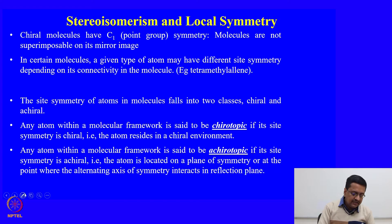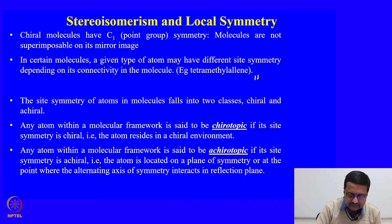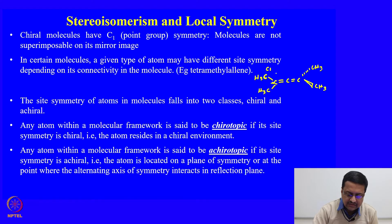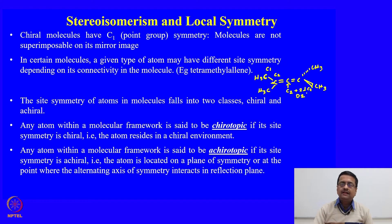For example, tetramethylallene. If we try to draw tetramethylallene, what we see is that this particular carbon has site symmetry C1, this particular carbon has site symmetry C2, and this particular carbon has site symmetry C2 plus 2 perpendicular C2's, which essentially means D2 symmetry. So different atoms in a molecule can have different site symmetry.